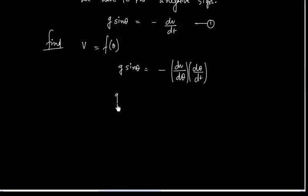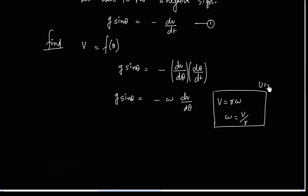And d theta by dt is omega. So minus omega dv by d theta. We can also use in circular motion V is equal to r omega, so omega is v by r. In this case radius is L, so omega is v by L.